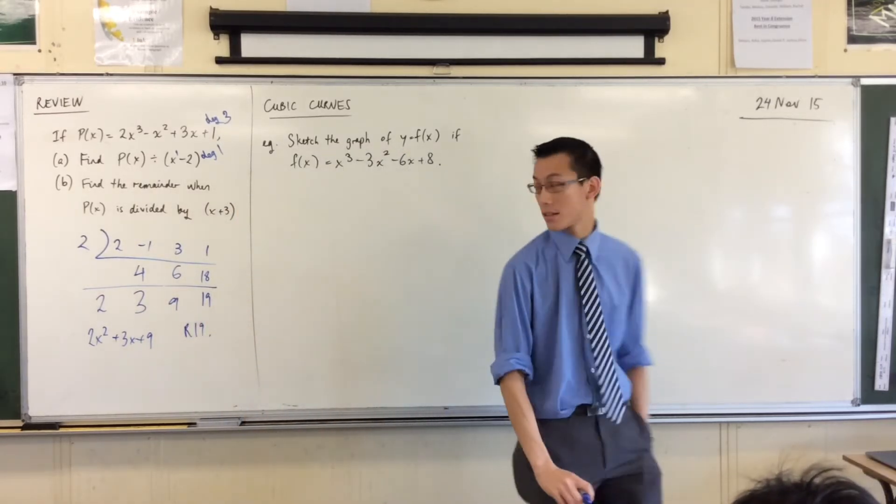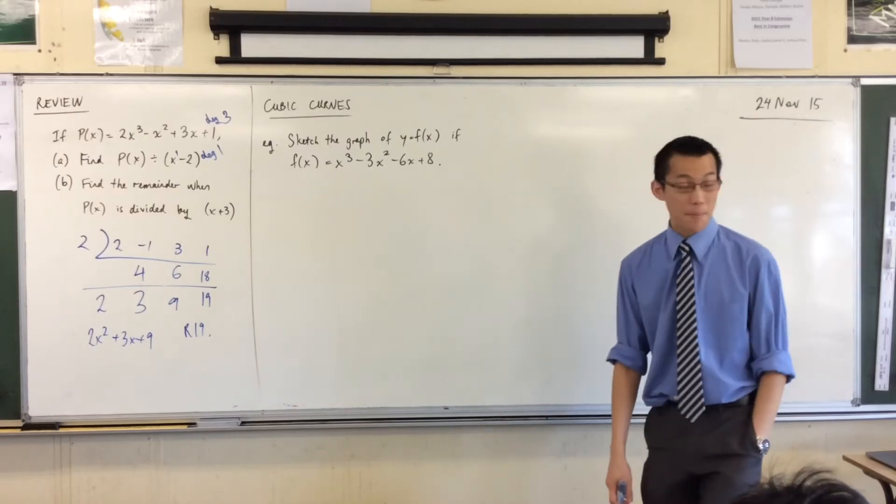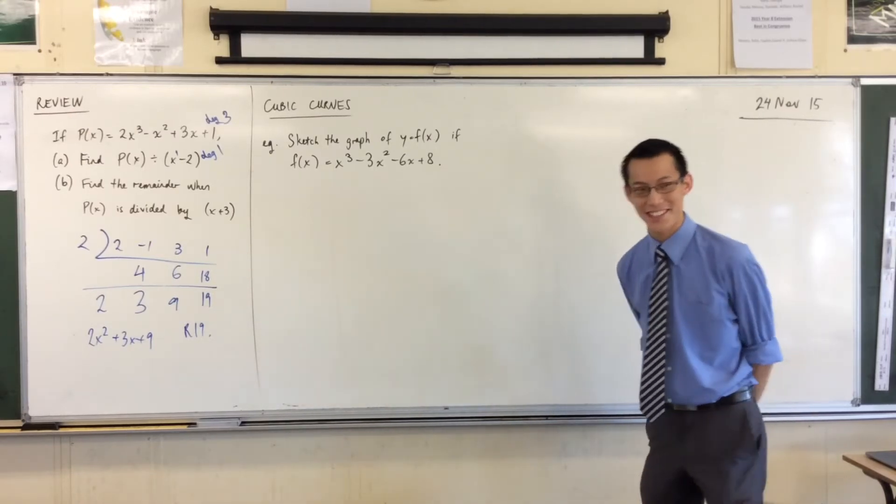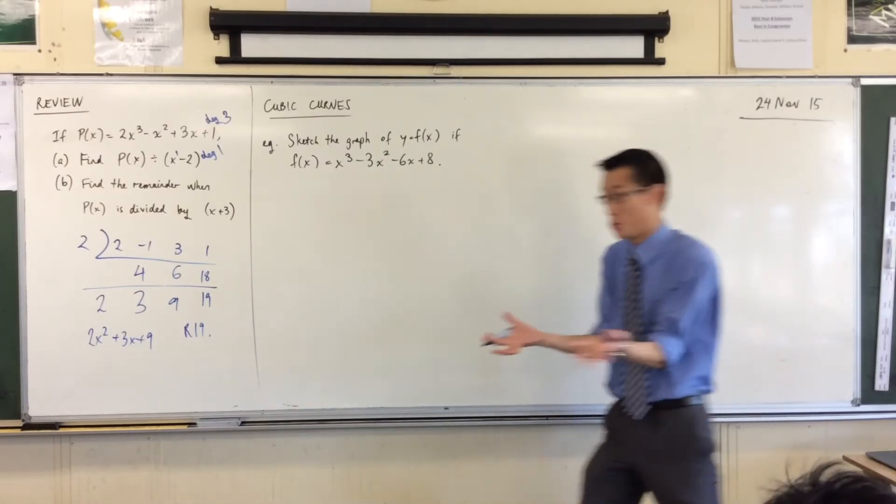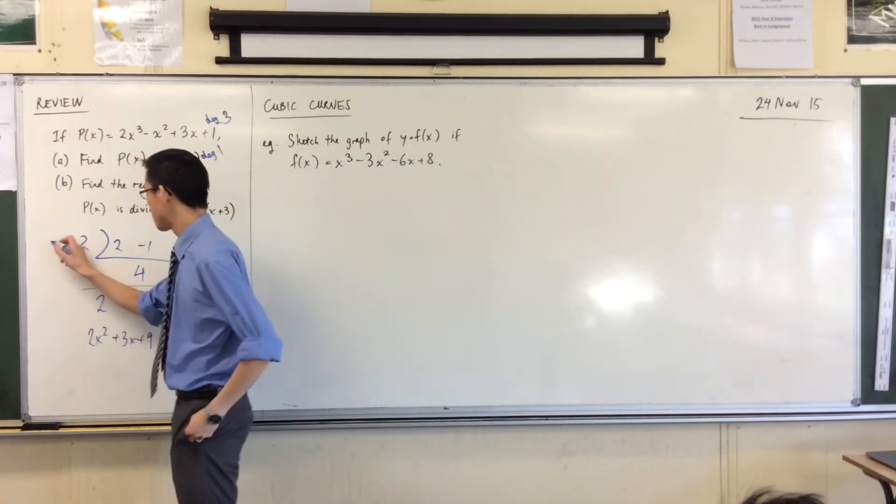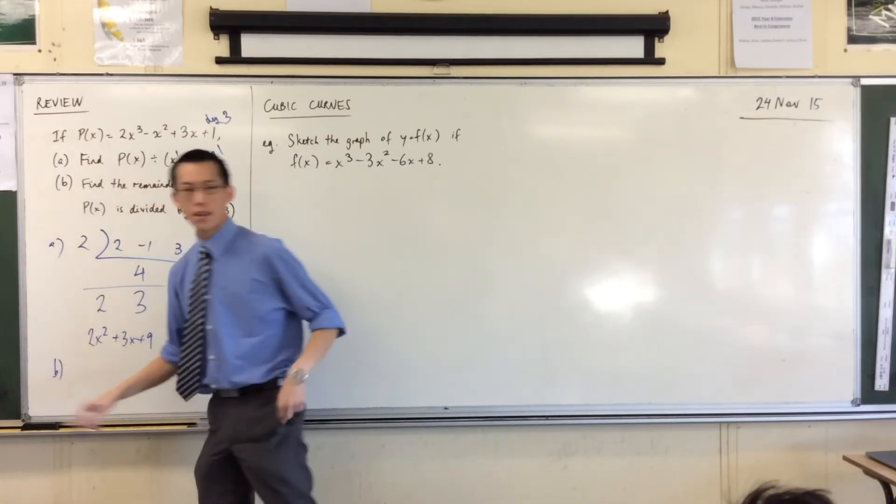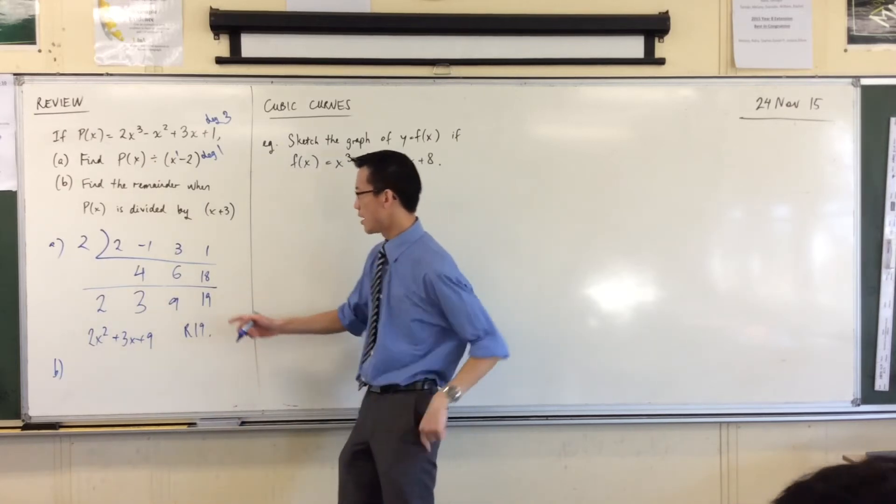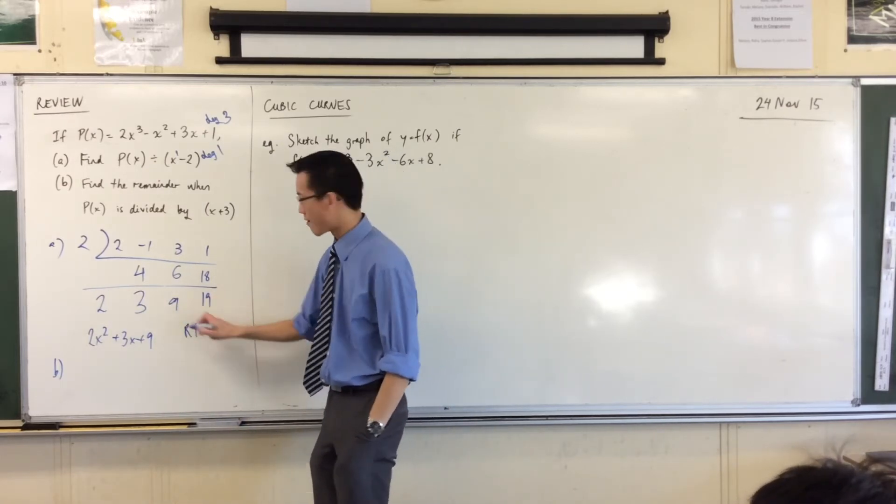Okay, so there you go. There's the division. Now, part B, I have left myself precariously a little space, but that doesn't matter, because you don't need much space to do this. This is part A. For part B, the remainder theorem is, you might notice, this number at the end, right?